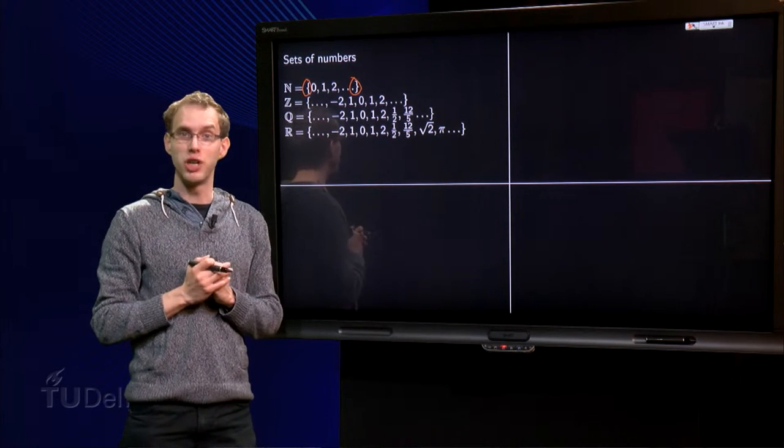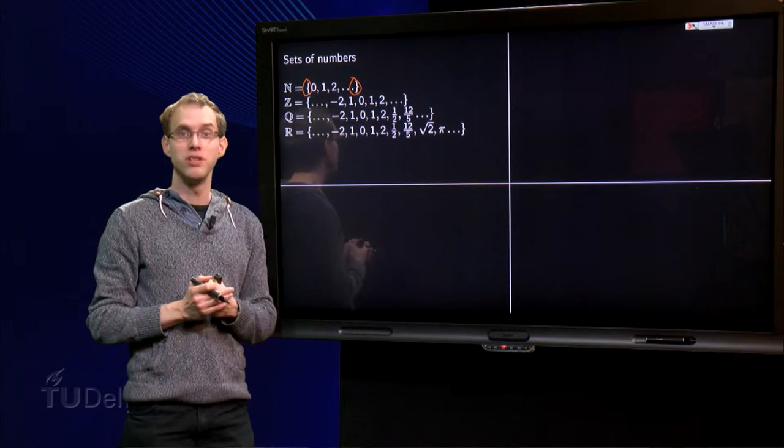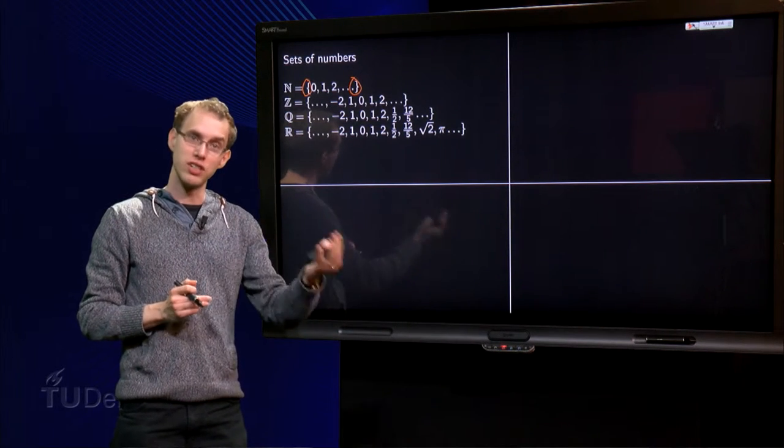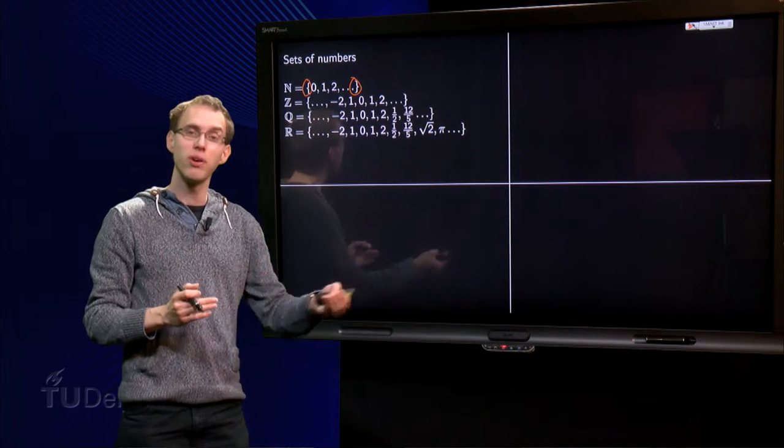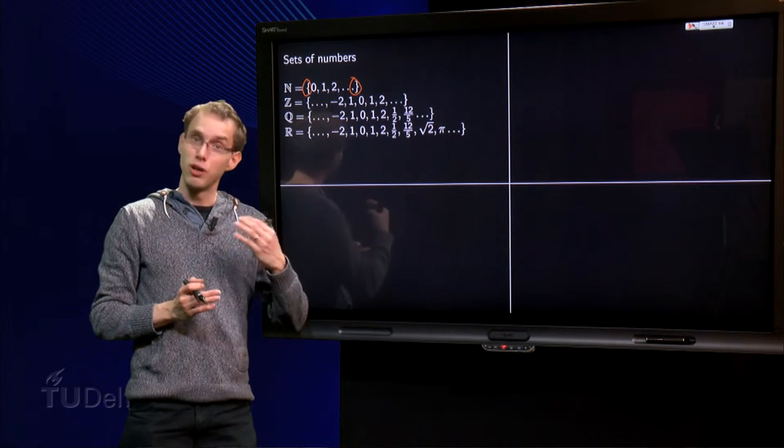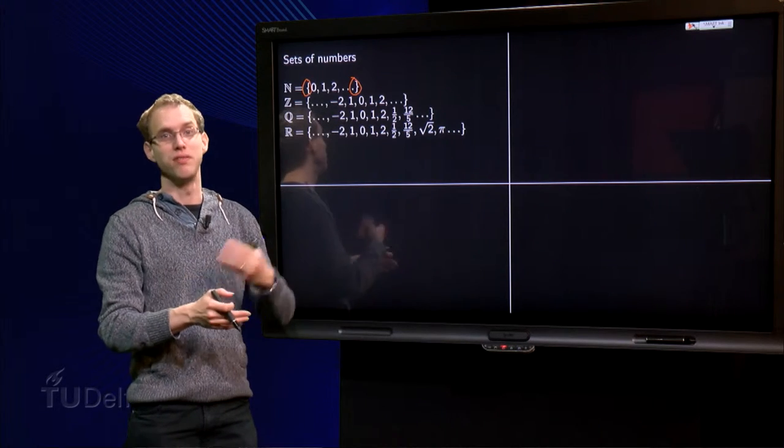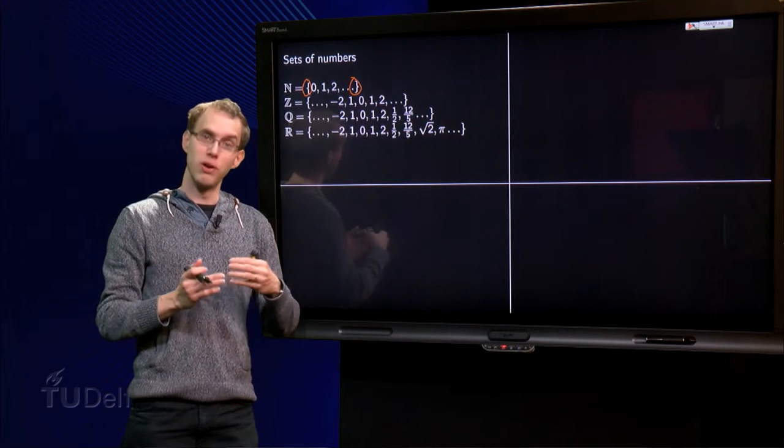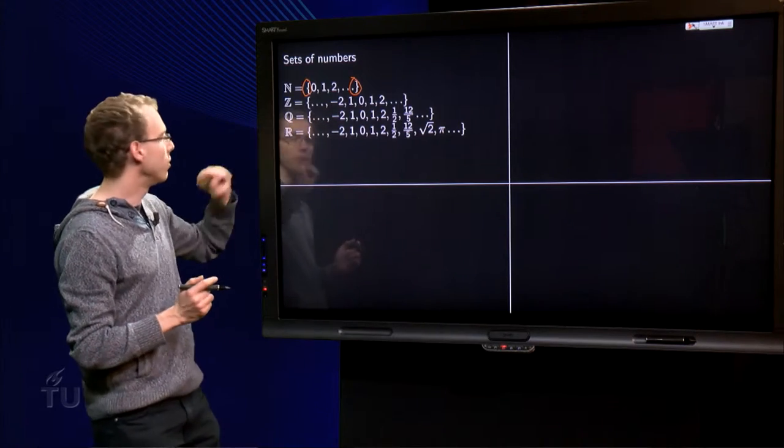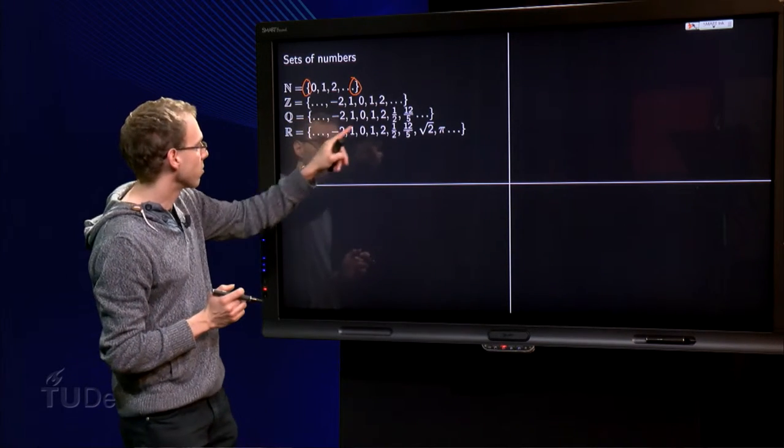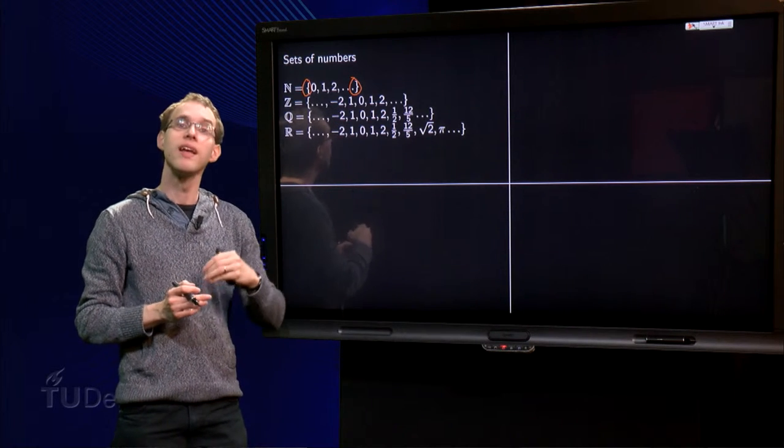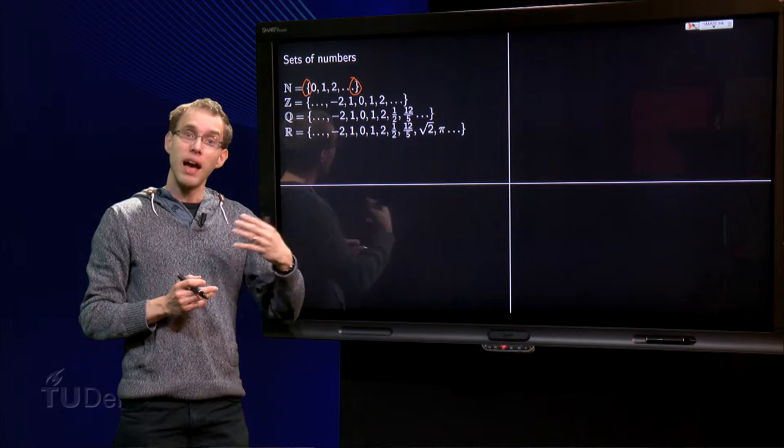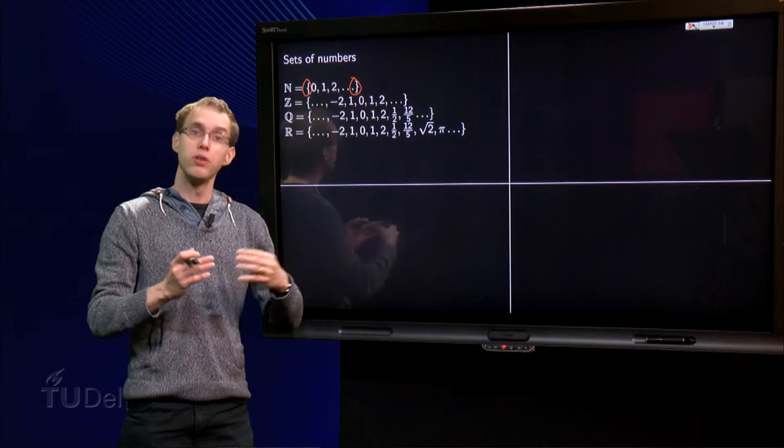Then you went on in primary education and you learned to divide. So you learned 6 divided by 3 equals 2, 8 divided by 2 equals 4, etc. But at a certain point you wanted to try 5 divided by 3. Well, that doesn't work out, so we learned the fractions. Q, the next set, which also contains 1 over 2 and 12 over 5, that kind of numbers. And Q is coming from the word quotient.